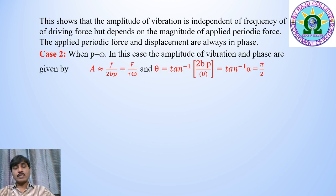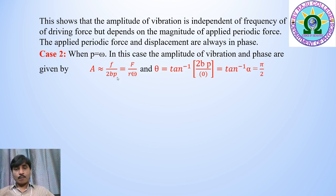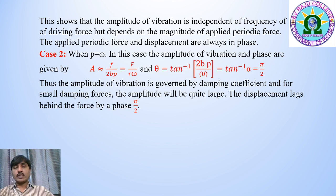Case 2: when p = ω, the frequency of the external periodic force equals the natural frequency of the oscillator. The amplitude A = f / (2bp) = F / (rω). The phase θ = tan⁻¹(2bp / 0) = tan⁻¹(∞) = π/2. Thus the amplitude of vibration is governed by the damping coefficient 2b, and for small damping forces the amplitude will be quite large. The displacement lags behind the force by a phase of π/2.